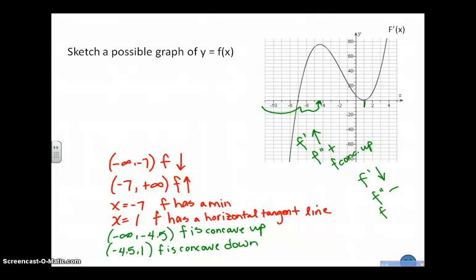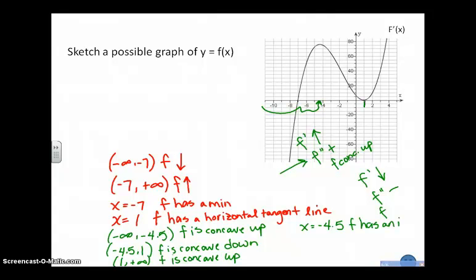And from 1 to positive infinity, because f prime is increasing, f double prime is positive, f will be concave up. I also know that at x equal negative 4.5, f has an inflection point. At x equal 1, f has an inflection point — concave up to concave down to concave up. Concavity does change.